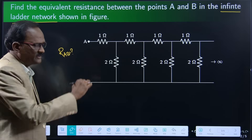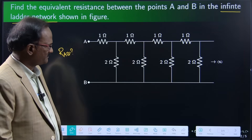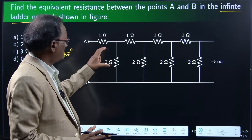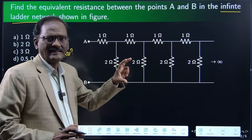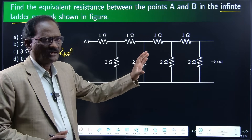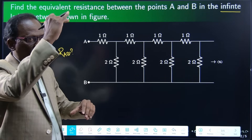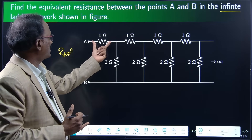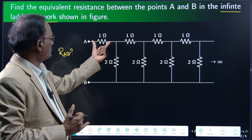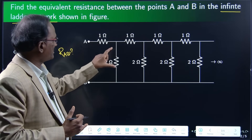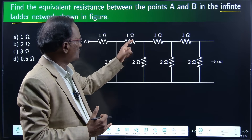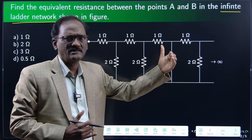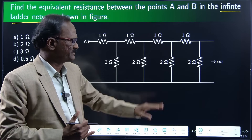This is an infinity network. It looks like a ladder — these are all rungs in the ladder. The 1 ohm is connected horizontally and the 2 ohm is connected vertically: 1 ohm, 2 ohm, 1 ohm, 2 ohm. This pair is continuing infinity times.